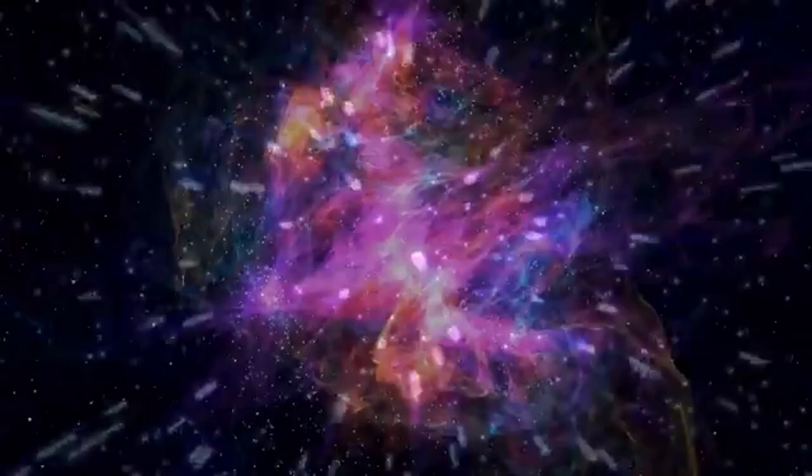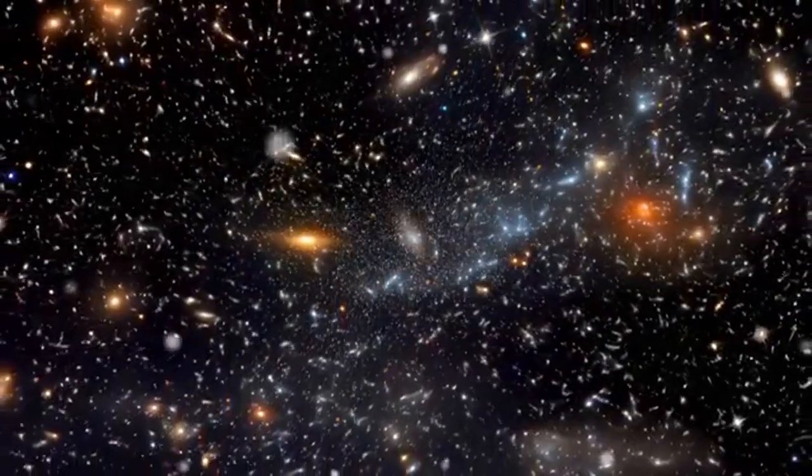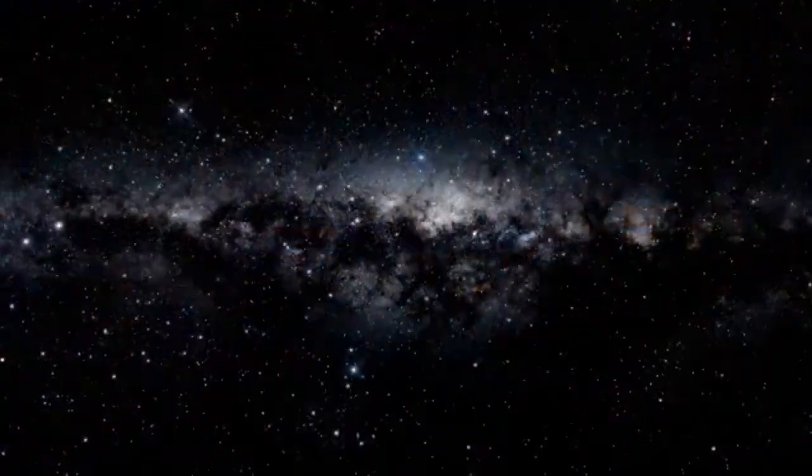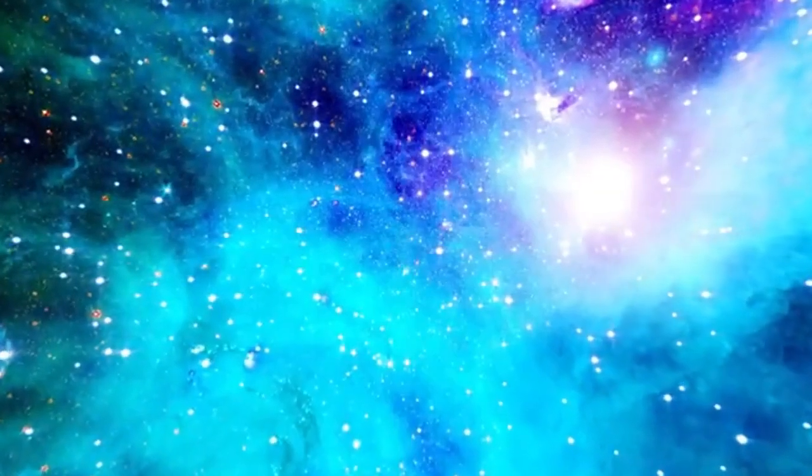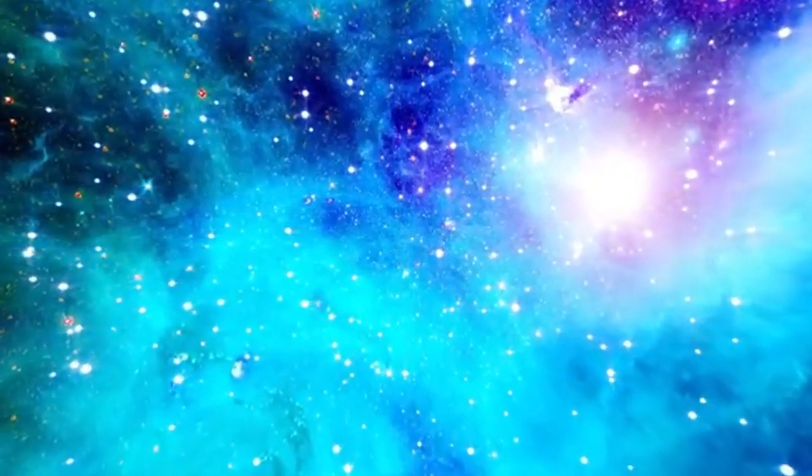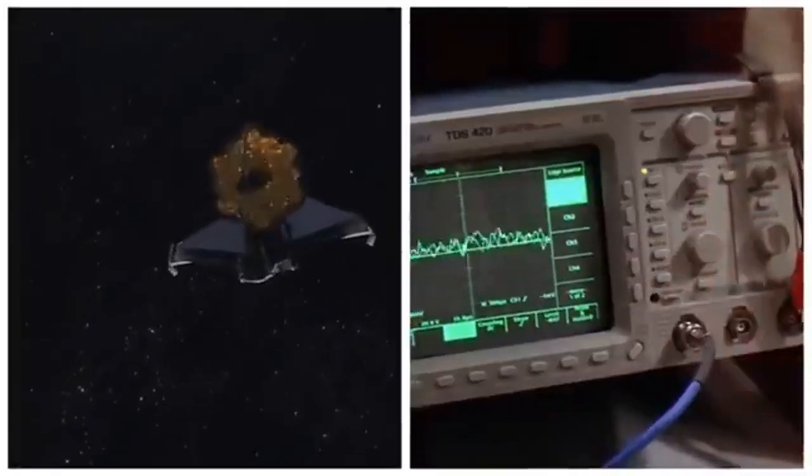Andromeda's sheer size is impressive, estimated to have a mass between 1 and 2 trillion times that of our sun, making it a colossal cosmic structure. Approximately 10 billion years old, Andromeda likely formed through the merger of several smaller proto-galaxies over billions of years.